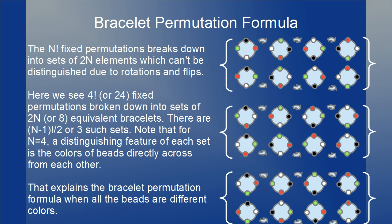Here we illustrate this with n equals 4 and show the 24 different fixed permutations broken down into sets of 8. For n equals 4, there is a distinguishing feature of the bracelets — each set of 8 has the same pairs of beads directly across from each other.